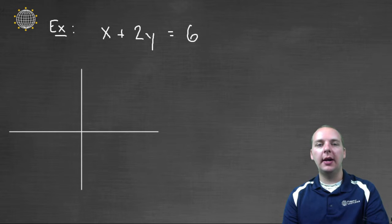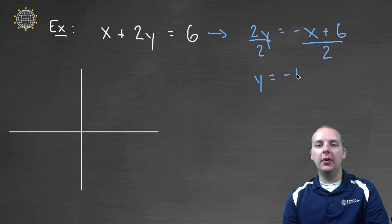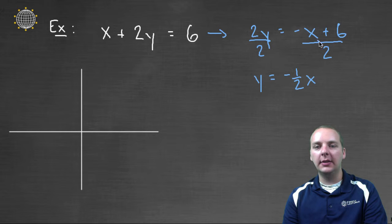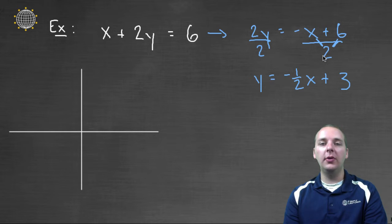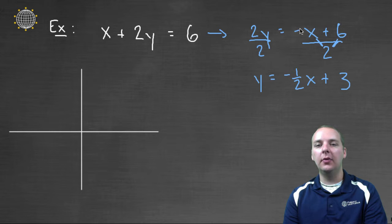So we'll subtract x from both sides, so we'll have two y equals negative x plus six. And then we'll divide both sides by two. And so we'll get y equals negative one-half x. And notice what I did there, I took the negative x divided by two, plus the six divided by two, which is three. So negative x plus six, all divided by two, is the same as negative one-half x plus three, which is six divided by two.